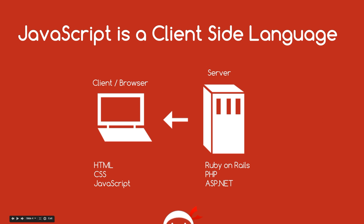Now JavaScript is a client-side language, and essentially what that means is that it runs on your computer in your browser. So when you type in a URL into your browser, that communicates with a server, it gets the information from the server which brings it back to your computer in the browser and displays it to you in the form of a web page — a combination of HTML, CSS and probably JavaScript. So all three of those run on your browser on your computer, and that's what is meant by a client-side language.